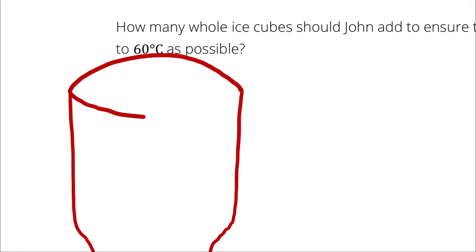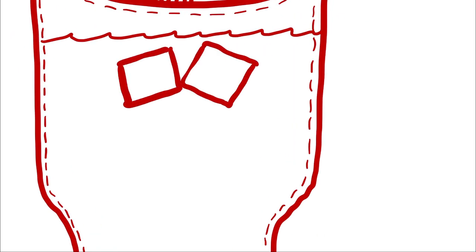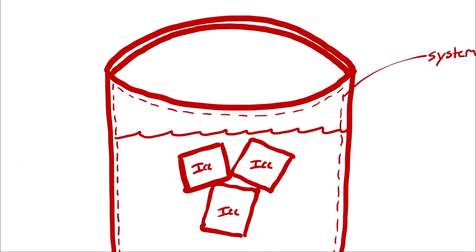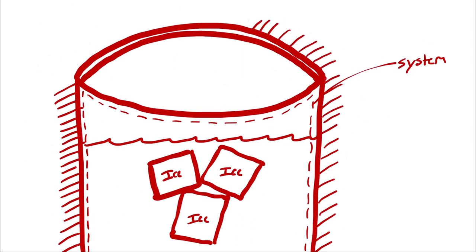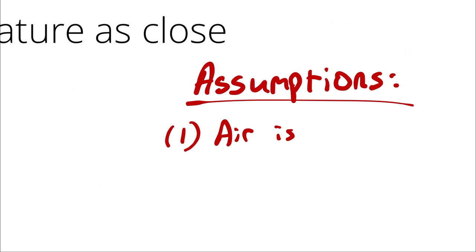I will begin with a system diagram. I'm drawing my system as the inside surface of the thermos, and I'm including both the ice and the coffee in my system analysis. Note that you could analyze the ice as a separate system and the coffee as a separate system, which would involve two energy balances, but it's just as easy to group everything together. I can begin my list of assumptions by neglecting the air at the top of the thermos, so my system is only ice and coffee, not air.